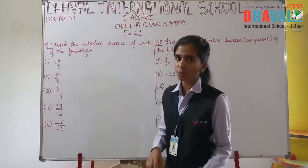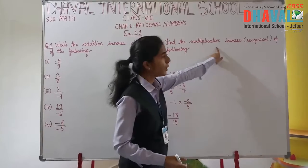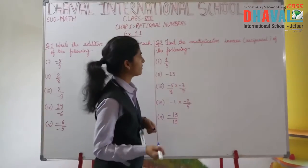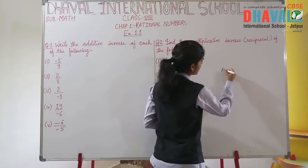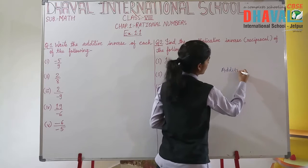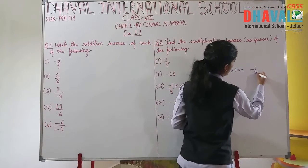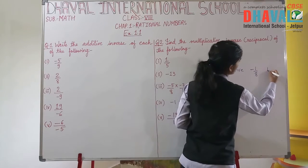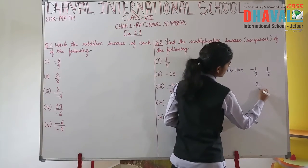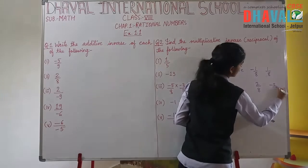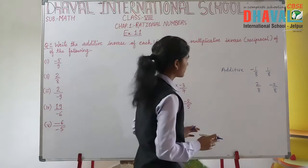In the previous video we discussed what is an additive inverse and what is a multiplicative inverse. Once again I am repeating: for an additive inverse, you need to change the sign. If the number is given as negative, you make it positive, and if the number is given as positive, you make it negative. This is simply the additive inverse of a particular number.